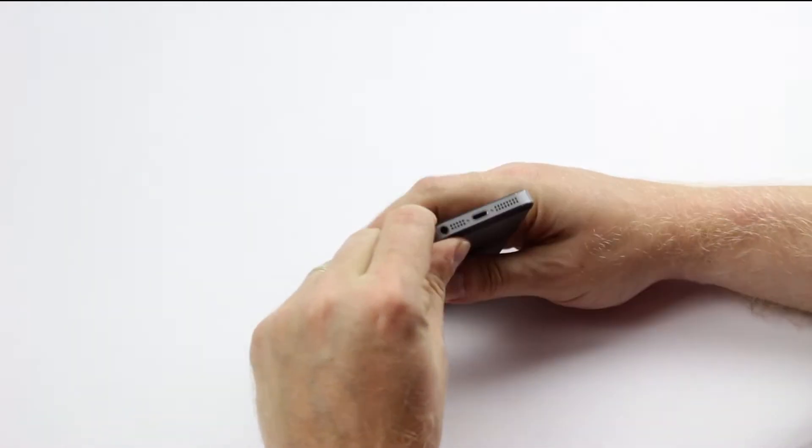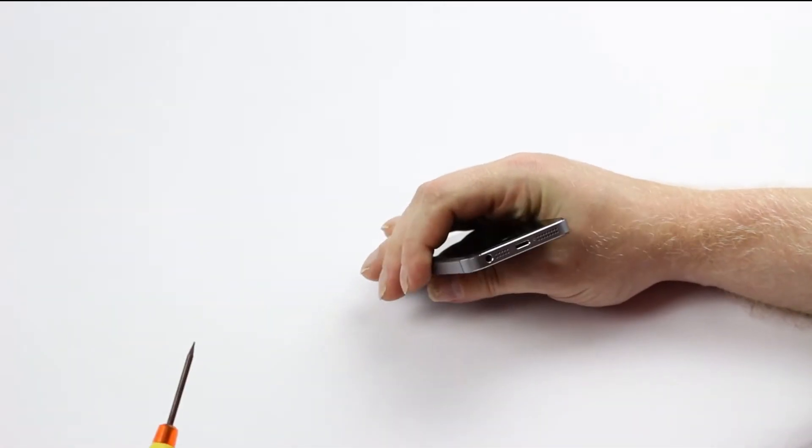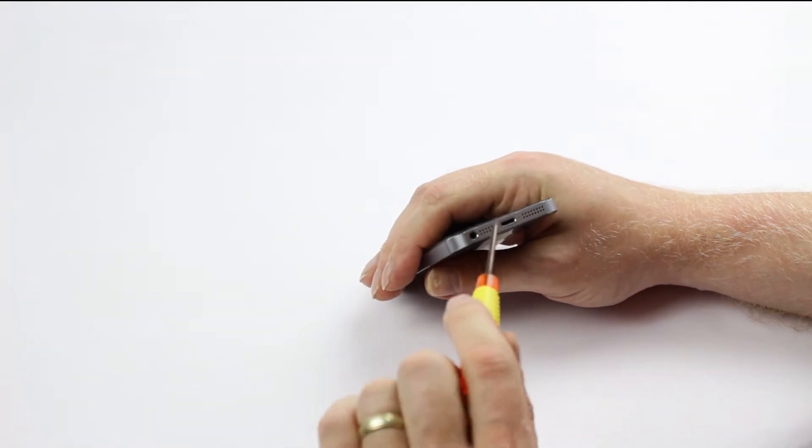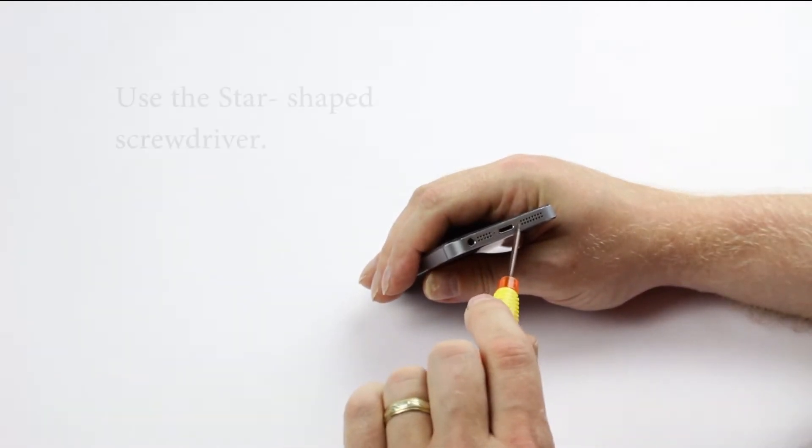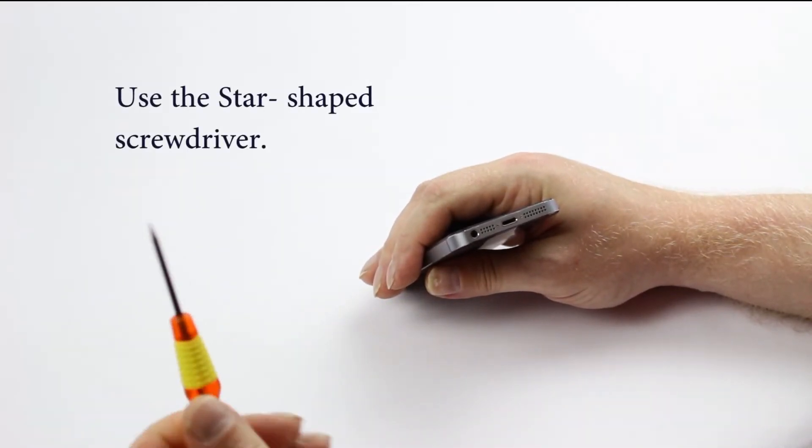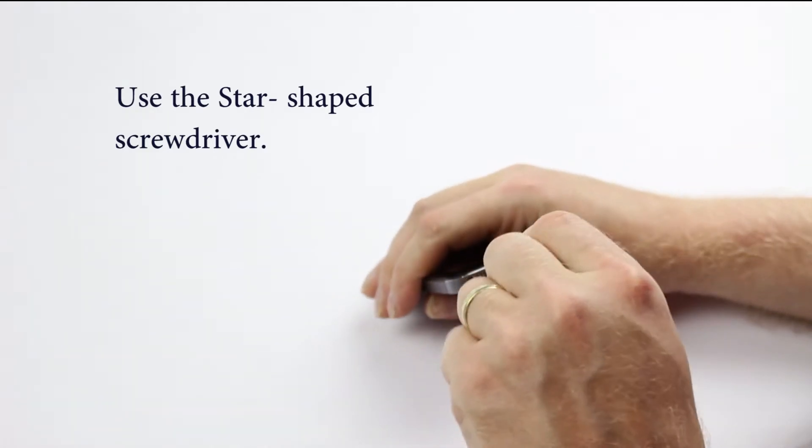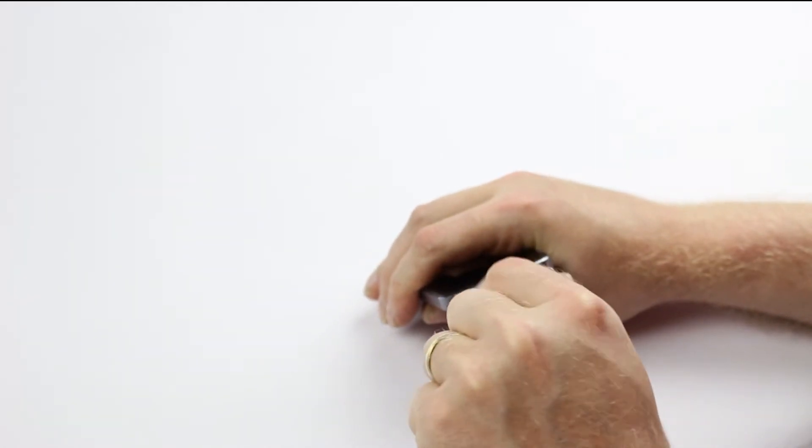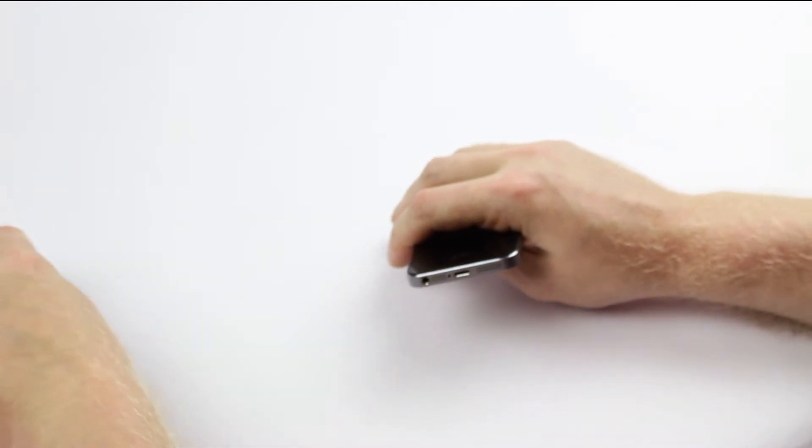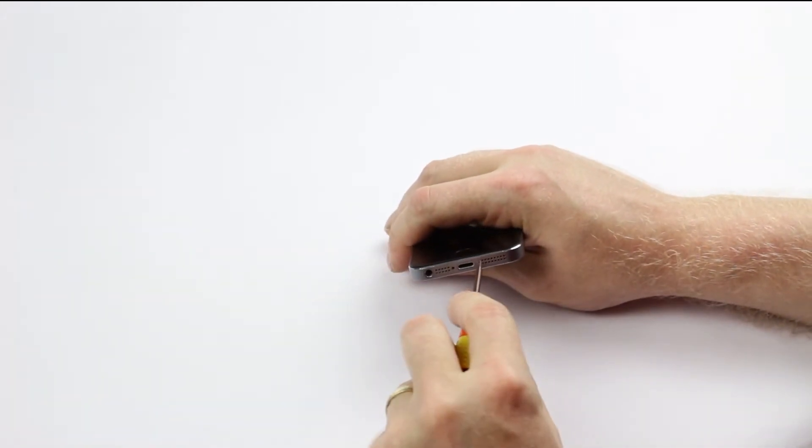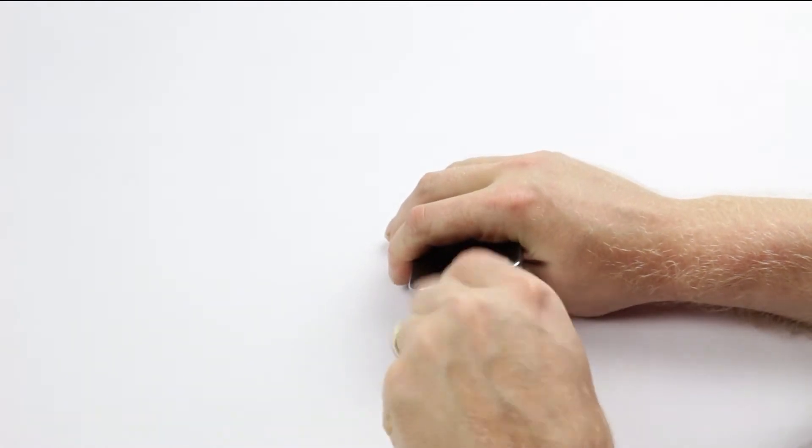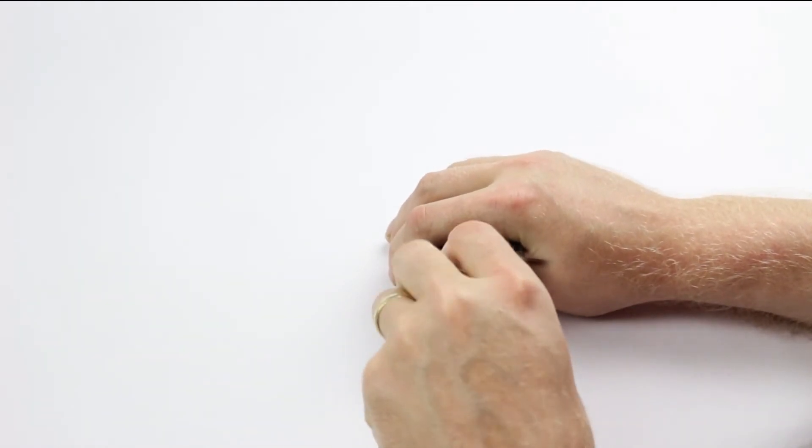Once the phone is turned off, there are two screws situated at the bottom of the phone. These are both star screws, so I use the star screwdriver, and I'm going to undo these two star screws. The first one, and the second one.